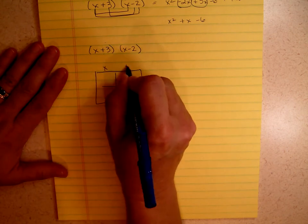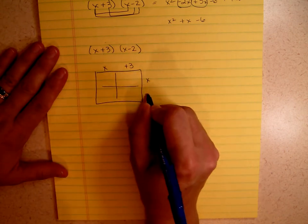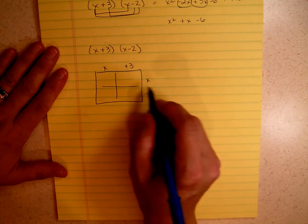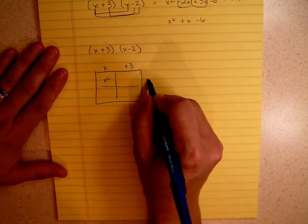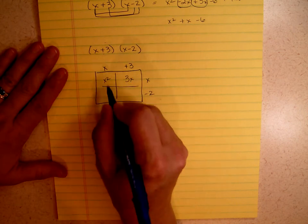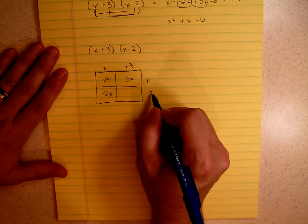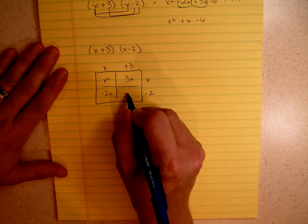We're going to put x plus 3, x minus 2. That's all we do. x times x is x squared. 3 times x is 3x. Negative 2 times x is negative 2x. And negative 2 times 3 is negative 6.